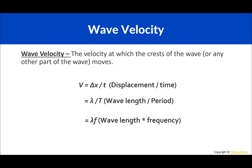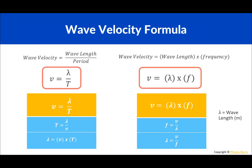Wave velocity — we should have learned about velocity already. Simply put, it's how far something travels divided by how long it takes. Wave velocity is the speed at which the crest of the wave, or any part of the wave, moves. The main formulas are: velocity equals wavelength divided by period, or velocity equals wavelength times frequency — you can manipulate it either way.